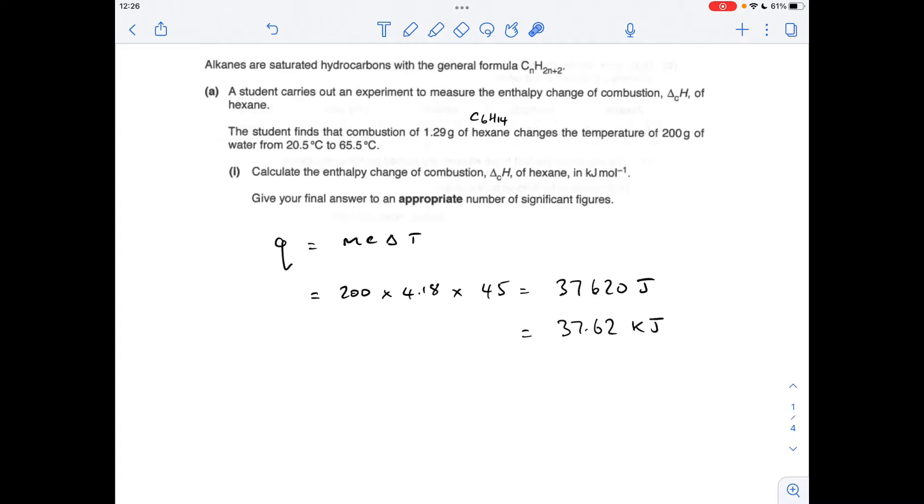So the first thing I'm going to do is work out the energy transferred from the reaction into the water, this 200 grams of water, so we use the MC delta T equation. It's 200 for the mass of water that's heated up times the specific heat capacity of water 4.18 multiplied by the temperature change, so the difference between those two is 45. That gives us that many joules and we divide by 1000 to put it into kilojoules.